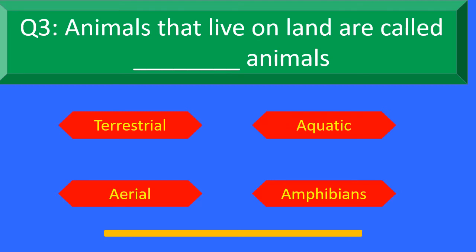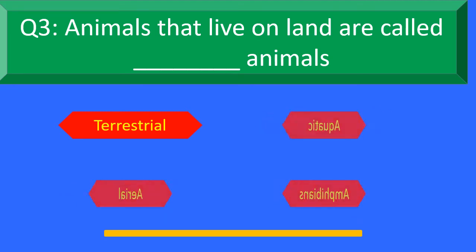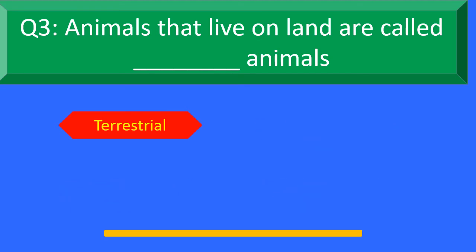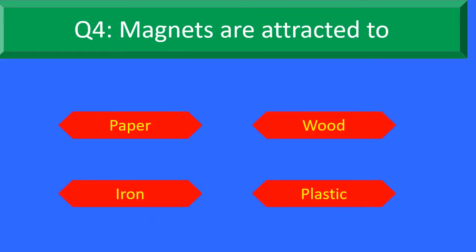The right answer is Option A: Terrestrial. Animals that live on land are called Terrestrial Animals. Moving to Question number 4.